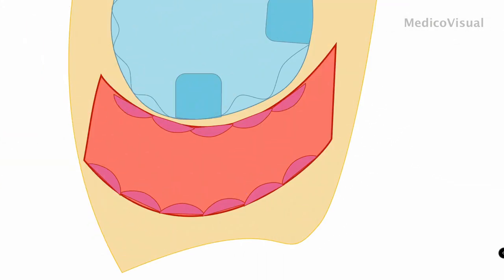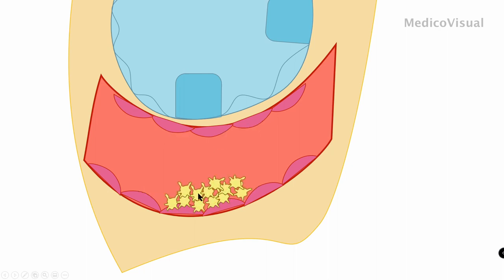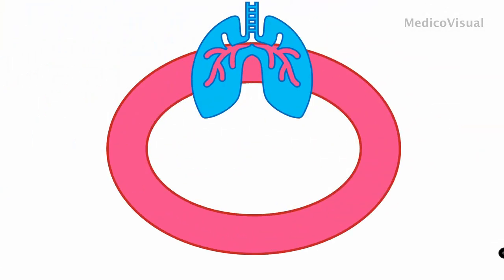When there is immune-mediated and virus-mediated damage to endothelial cells, platelets come and stick to the damaged endothelial cells, forming clots and worsening the situation. Along with that, thrombocytopenia — a decrease in platelets — may also occur in the blood. This is another feature of COVID-19.